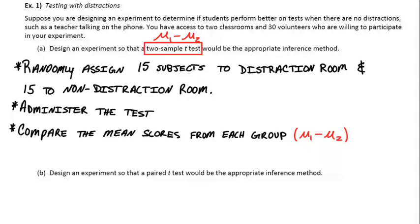And when we say compare the mean scores from each group, that would be mu1 minus mu2. So that's the two-sample T procedure.